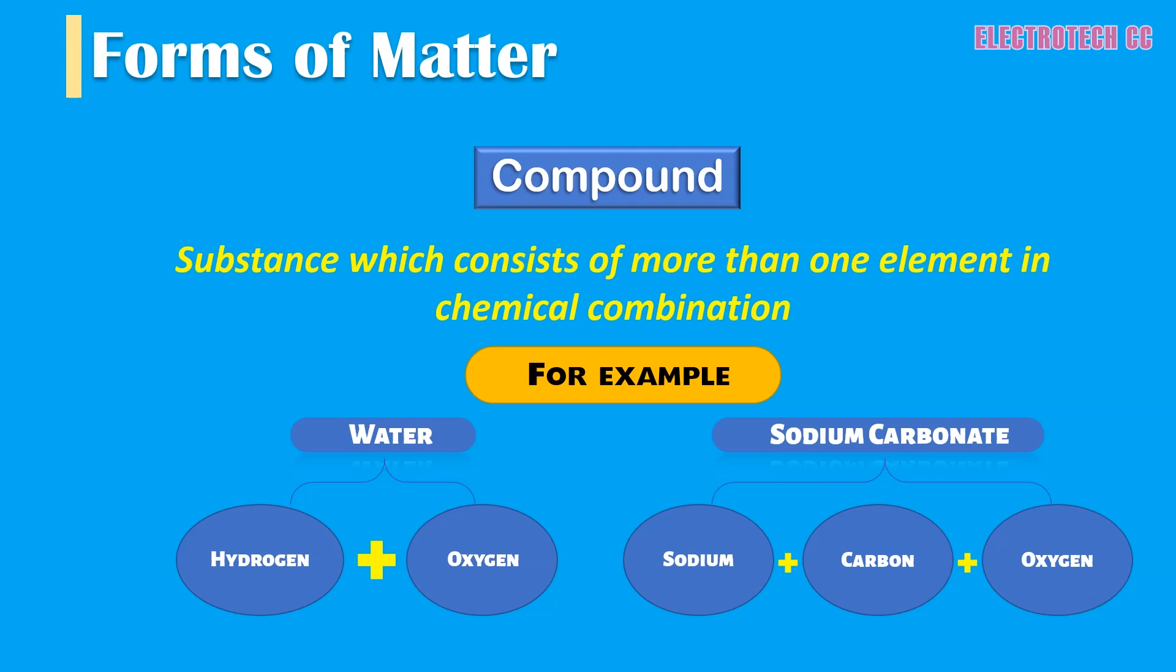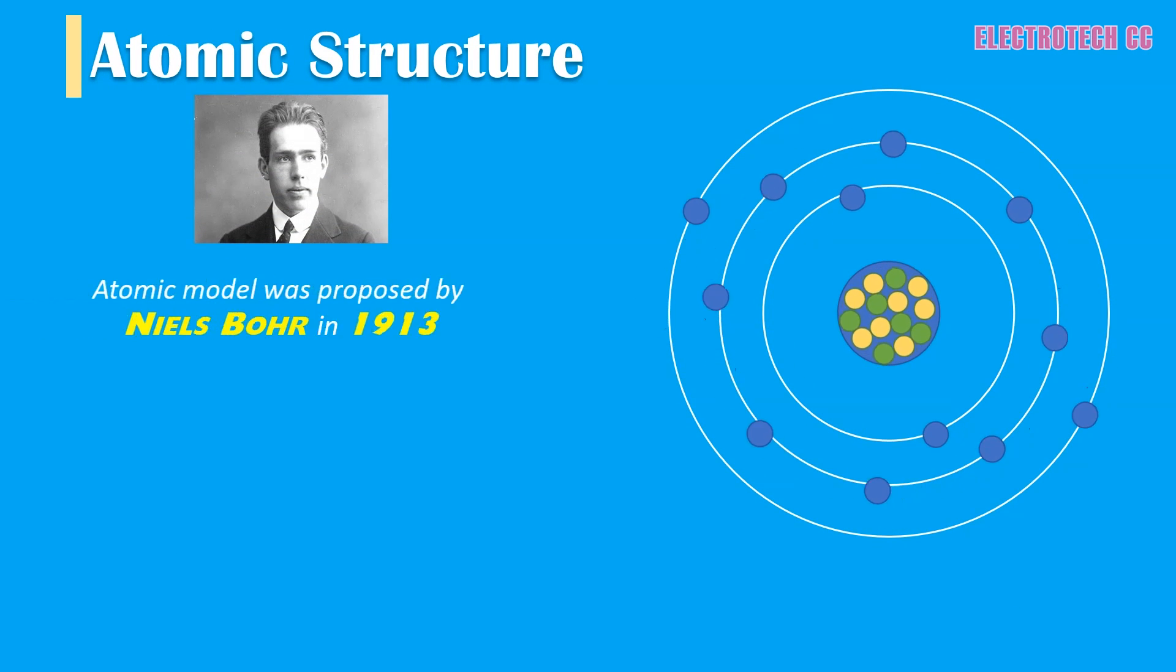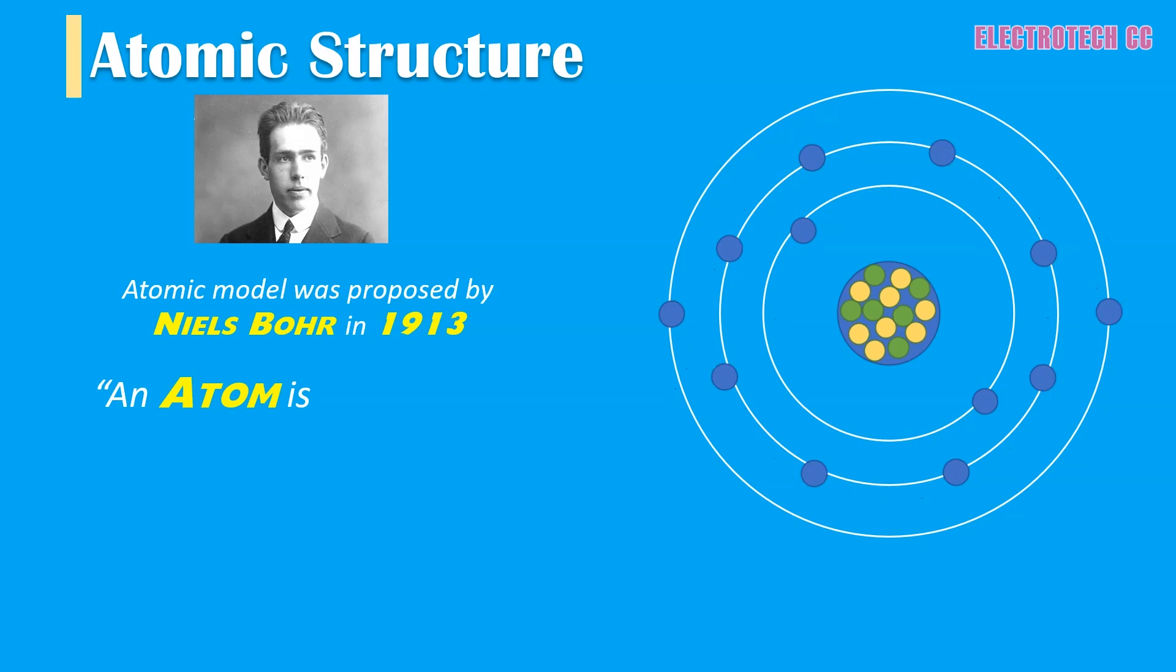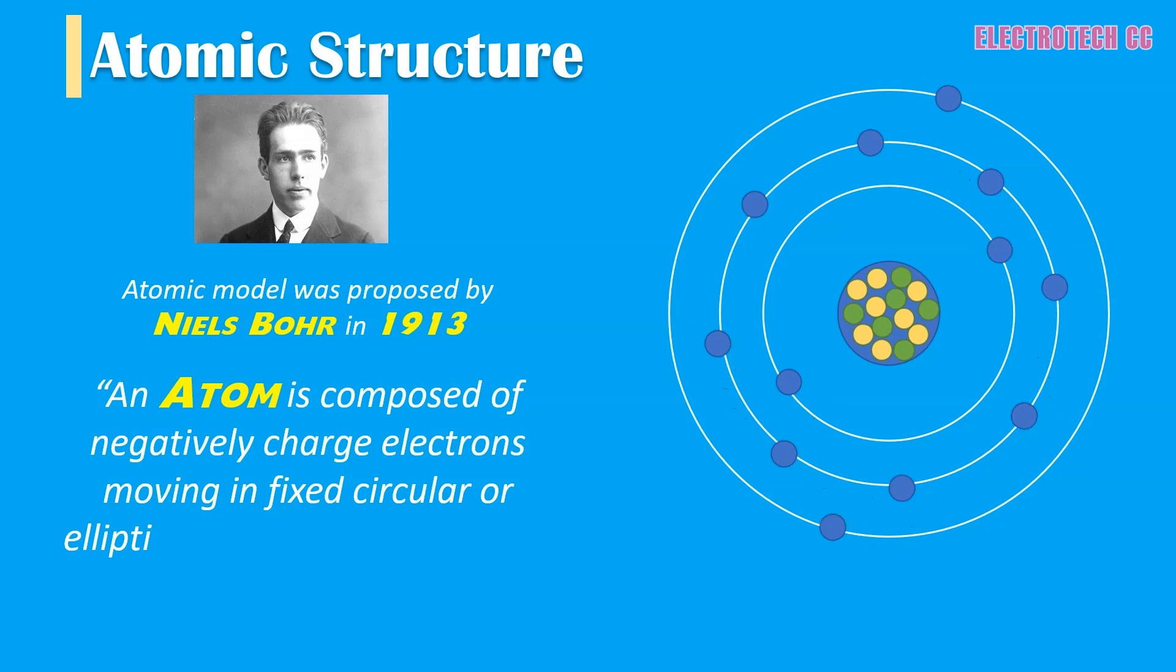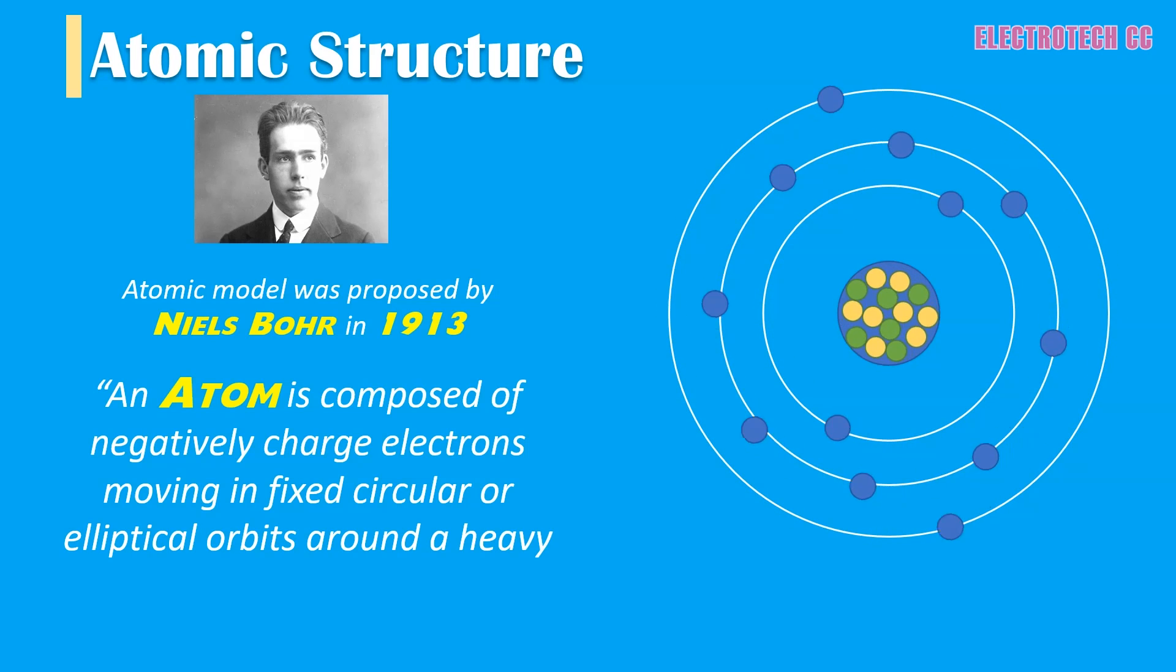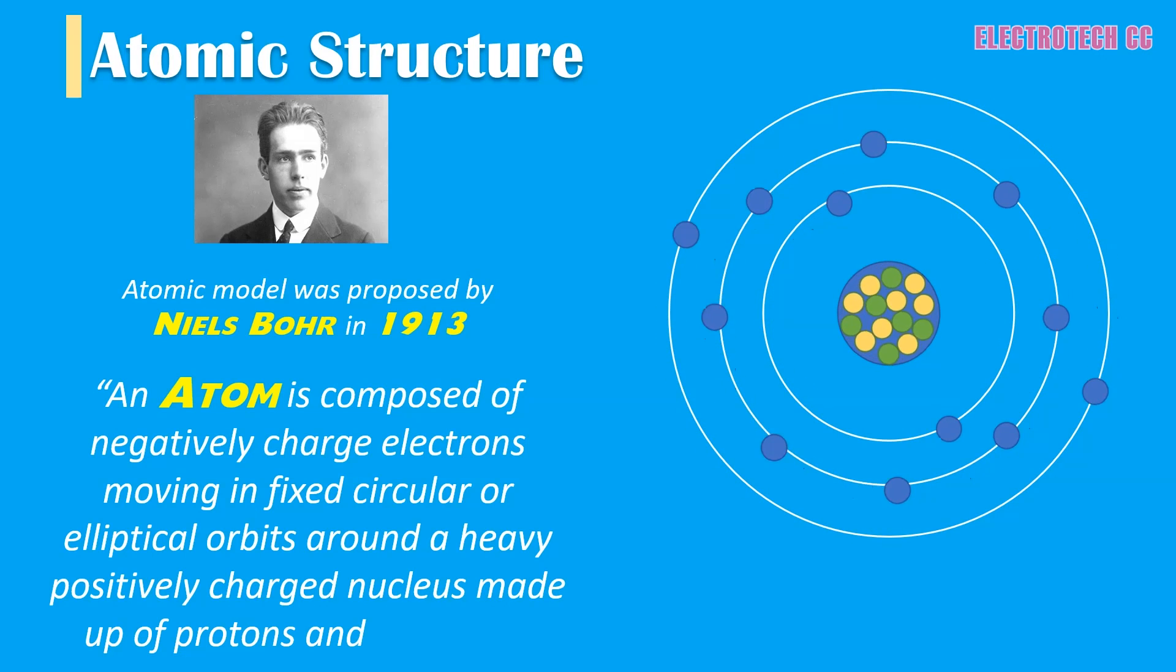Now let us discuss the atomic structure which was proposed by Niels Bohr in 1913. An atom is composed of negatively charged electrons moving in fixed circular or elliptical orbits around a heavy positively charged nucleus made up of protons and neutrons.